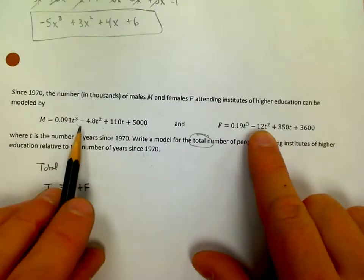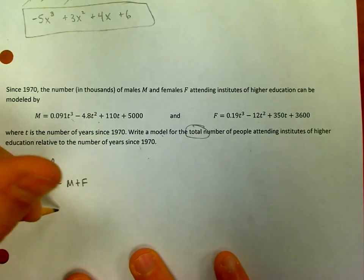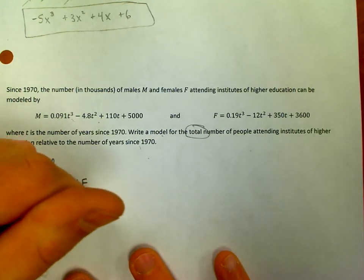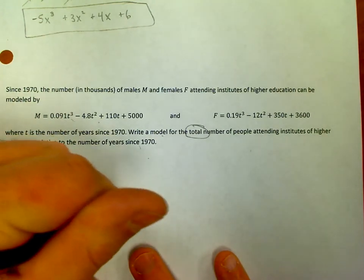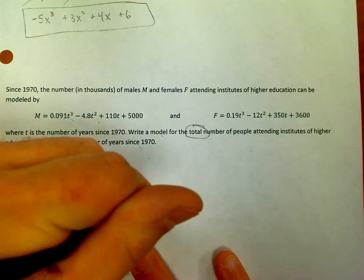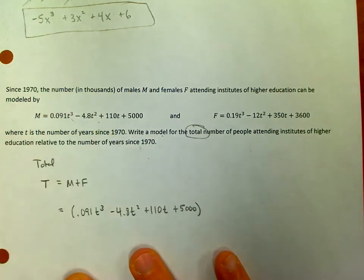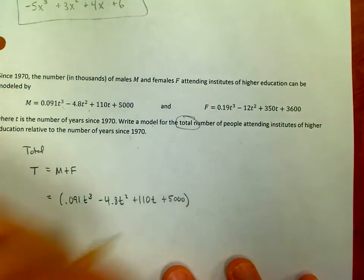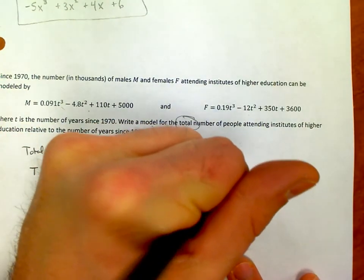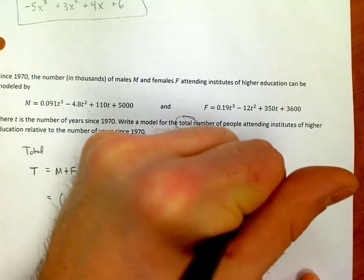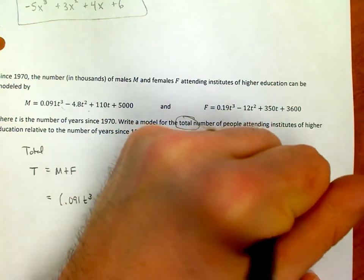Now if you watch my previous video, then that maybe sounds complicated, but really all we're doing is combining like terms, right? So if I go through and I say, really that's giving me 0.091t³ - 4.8t² + 110t + 5000, that'd be the males. And I'm going to add together the females, which is 0.19t³ - 12t² + 350t + 3600.